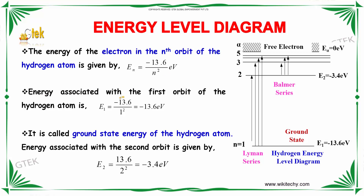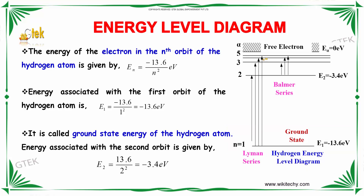Energy associated with the first orbit of the hydrogen atom is E1 equal to minus 13.6 by 1, that is minus 13.6 eV. It is called the ground state energy. From any other outer orbit to the first orbit, that is Lyman series. For the second, it is Balmer series.